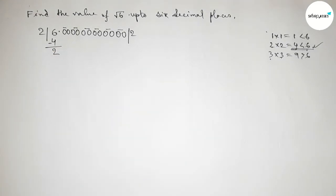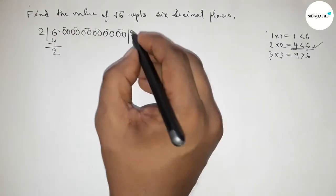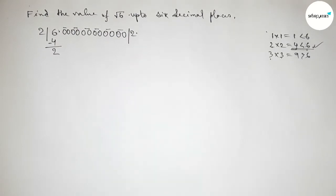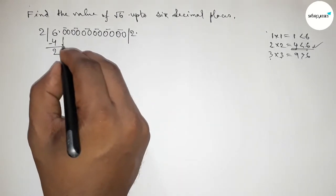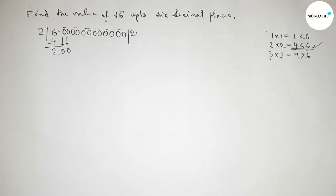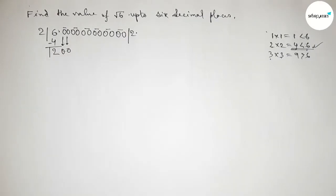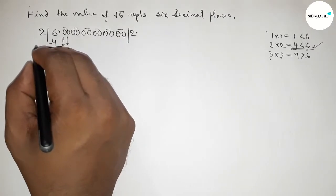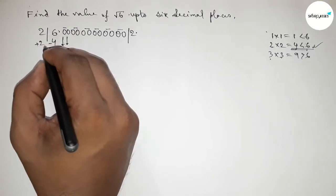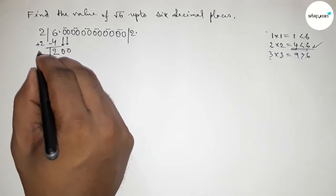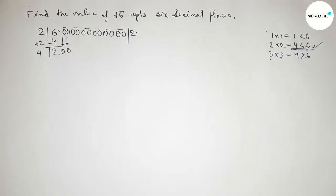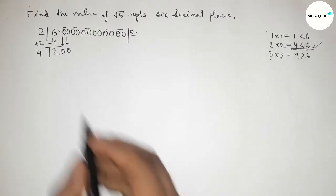Subtracting gives 2. Next, bring down the decimal point and write the first pair of zeros, then draw a division line. The current number is 2, so we add 2 to itself: 2+2=4. Now we take a number beside 4 and multiply by that number.